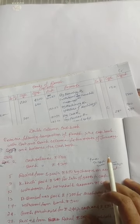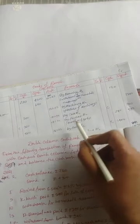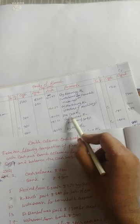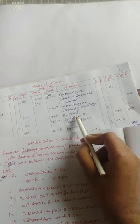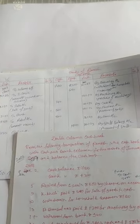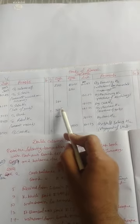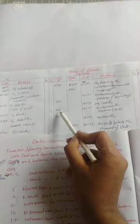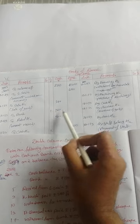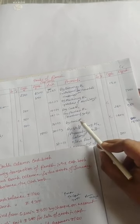The next transaction: withdrawal from bank, 960. This is a contra entry. The journal entry is: cash account debit to bank account. On the debit side, we write 'To bank account' and the amount 960 goes in the cash column.